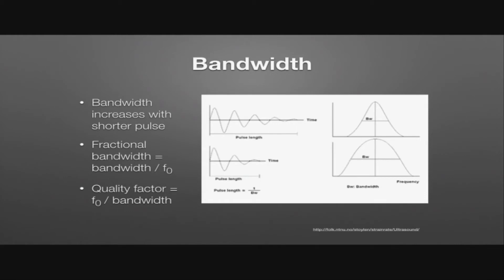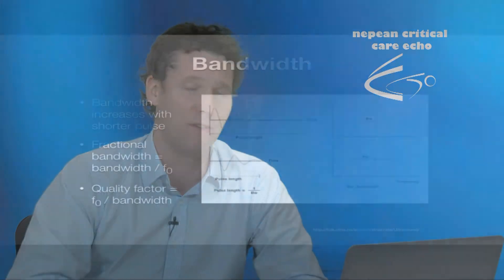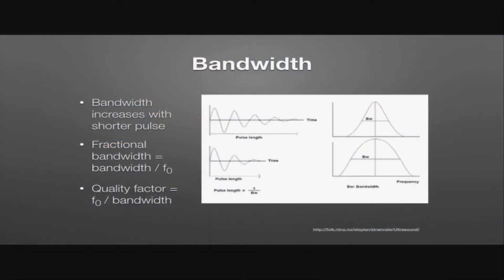The bandwidth is drawn around a central frequency known as the operating frequency. For instance, imaging probes like the abdominal probe operate at lower frequencies compared to a linear probe operating at higher frequencies. Although we describe a single operating frequency, what's actually happening is that a range of frequencies is being transmitted. We describe the fractional bandwidth as the bandwidth divided by the operating frequency, and the quality factor as the operating frequency divided by the bandwidth.